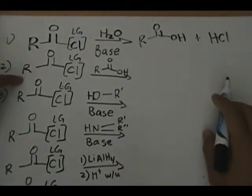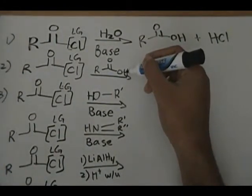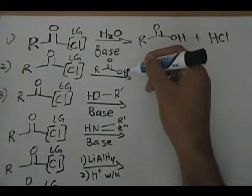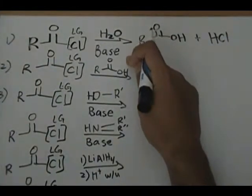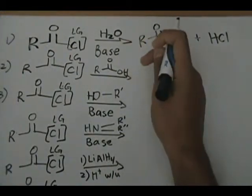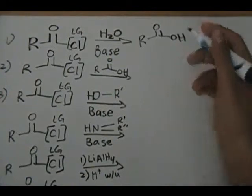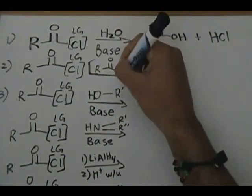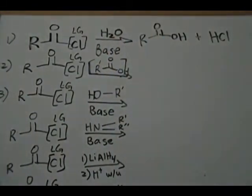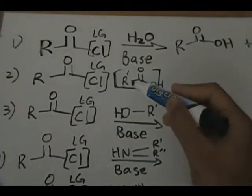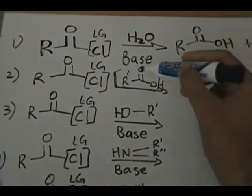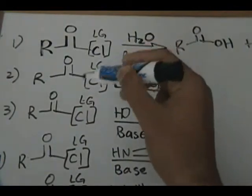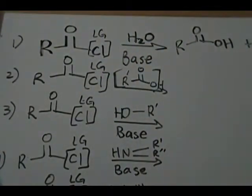Moving on to the second reaction: we have an acid chloride reacting with a carboxylic acid. You can also see the same reaction done with a carboxylate anion — effectively the same thing as a carboxylic acid except the H is missing; it's an anion with a negative charge on the oxygen and some cation to neutralize that charge. What we do is replace the chlorine with the carboxylate group in brackets. This R represents a carbon group — I put a little mark to indicate this carbon group does not have to be the same as the other one. If you think about it, you'll effectively make an anhydride.